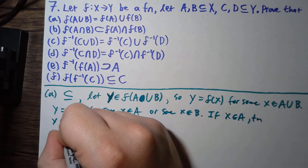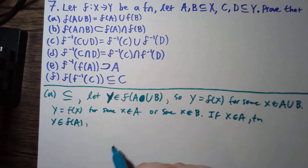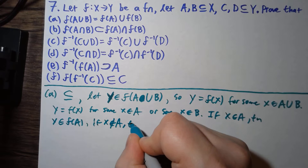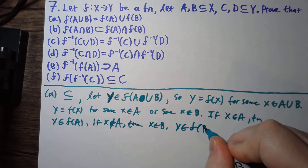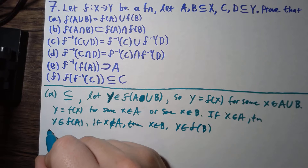So that means that y is f of x for some x in A or some x in B. If x is in A, then we have that y is in f of A, namely it'll be in f of A union f of B. But if x is not in A, then x is in B, and y would then be in f of B, namely it'll be in f of A union f of B. So we have this subset.